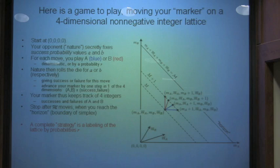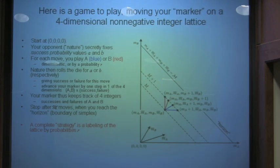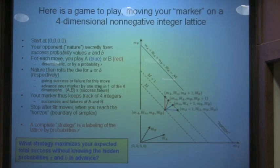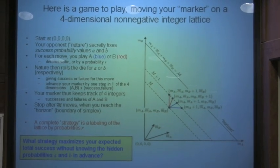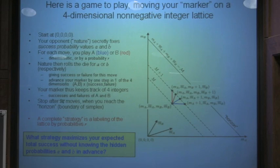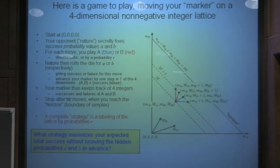A complete strategy for us is to label the lattice by our probabilities R for making the move A or B. If we knew the complete strategy, that'll never change, because in an identical game, if we go through the same point on the graph, we're just in exactly the same situation. The question is, what strategy maximizes our expected total success without knowing the values of little a and little b in advance?